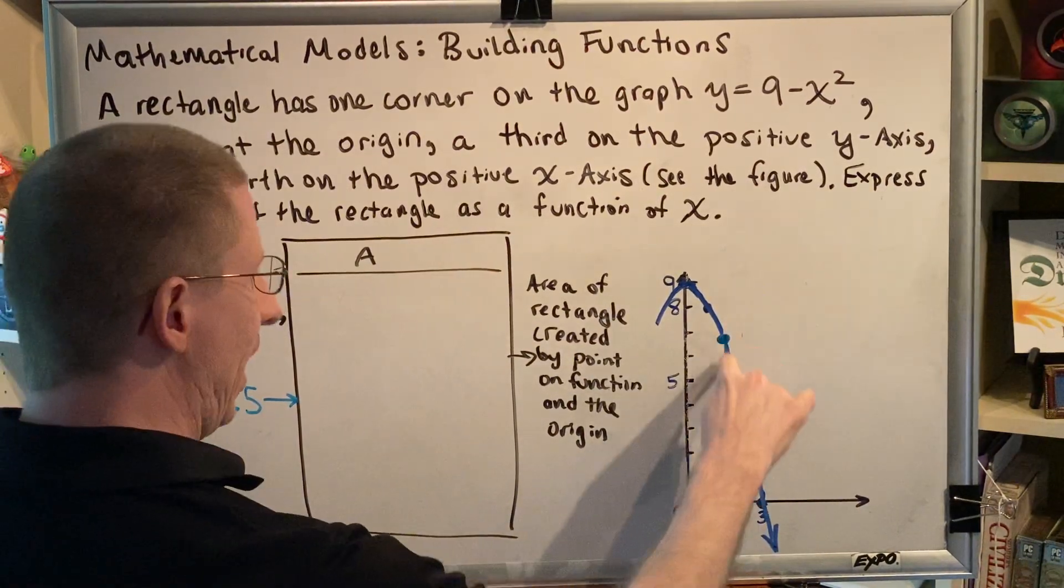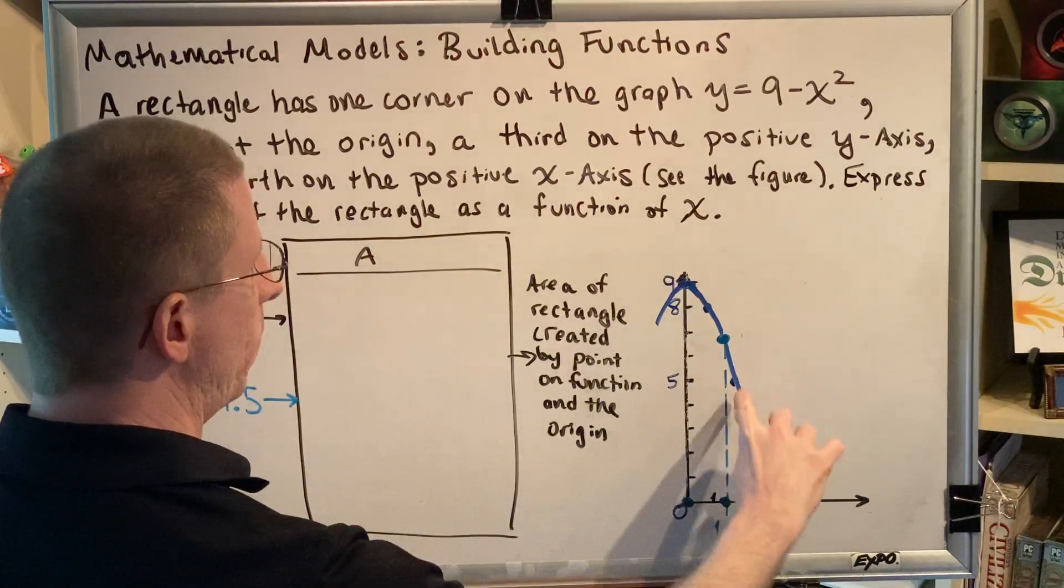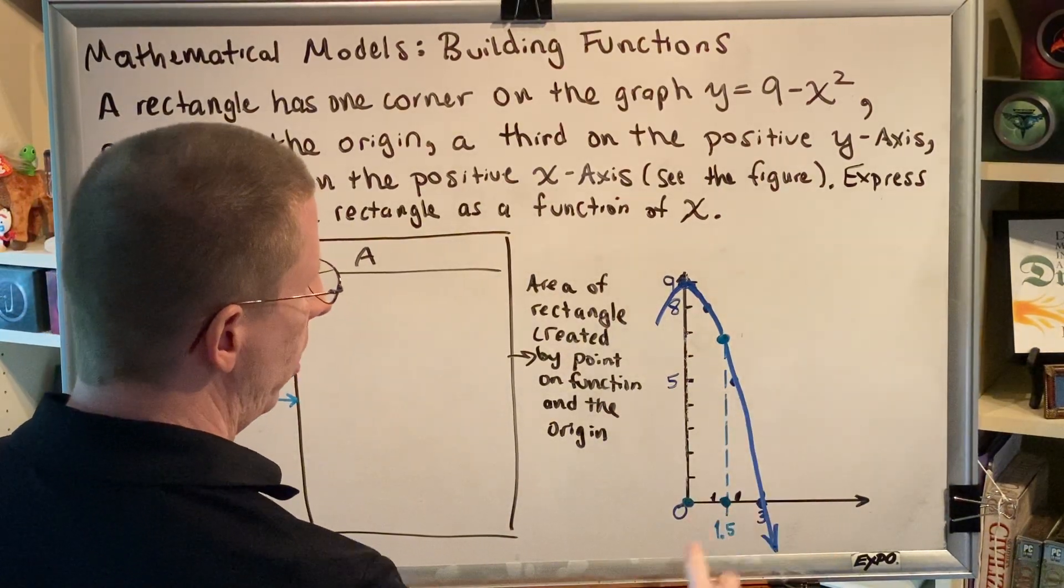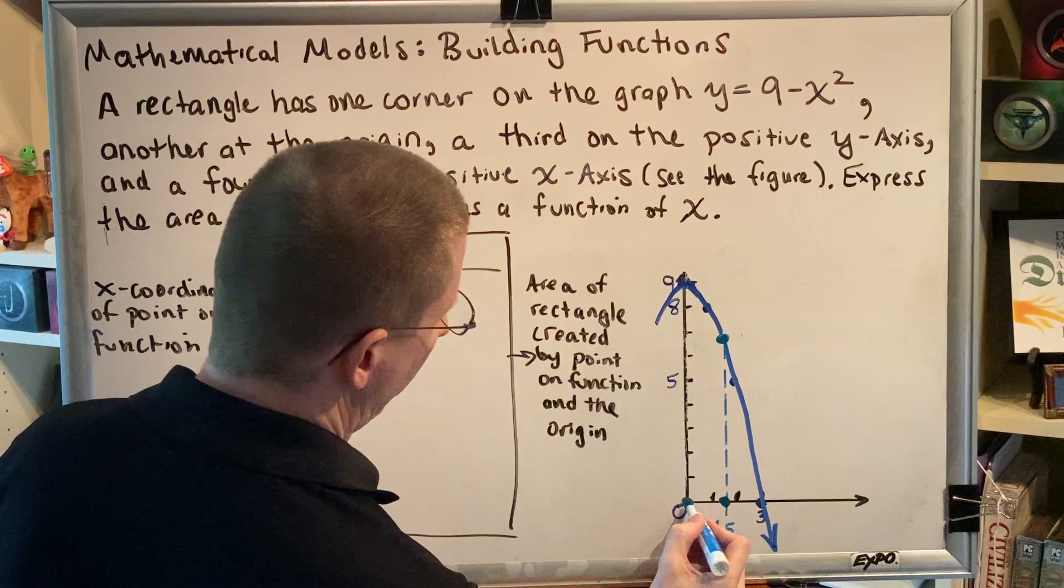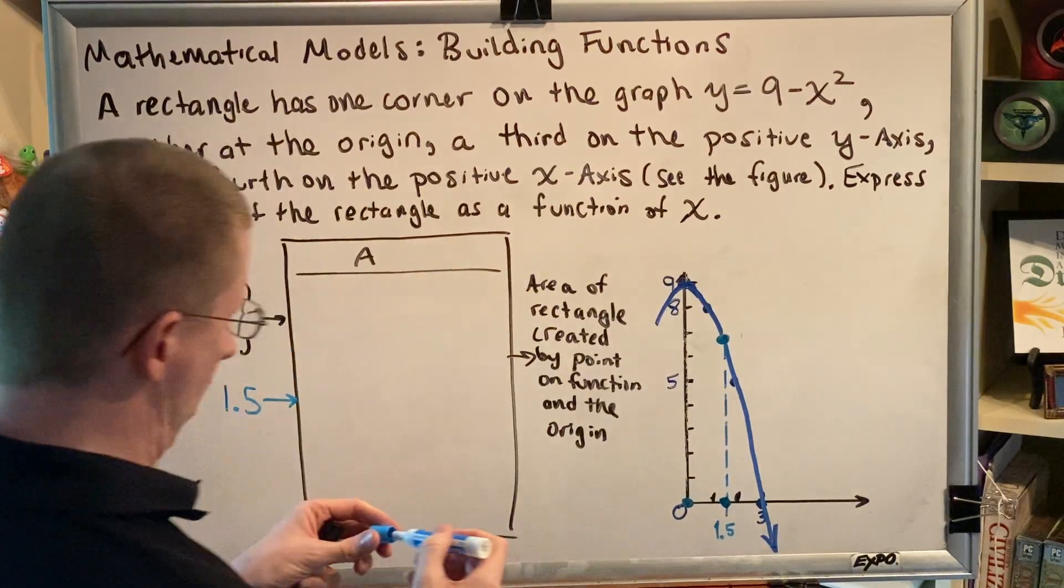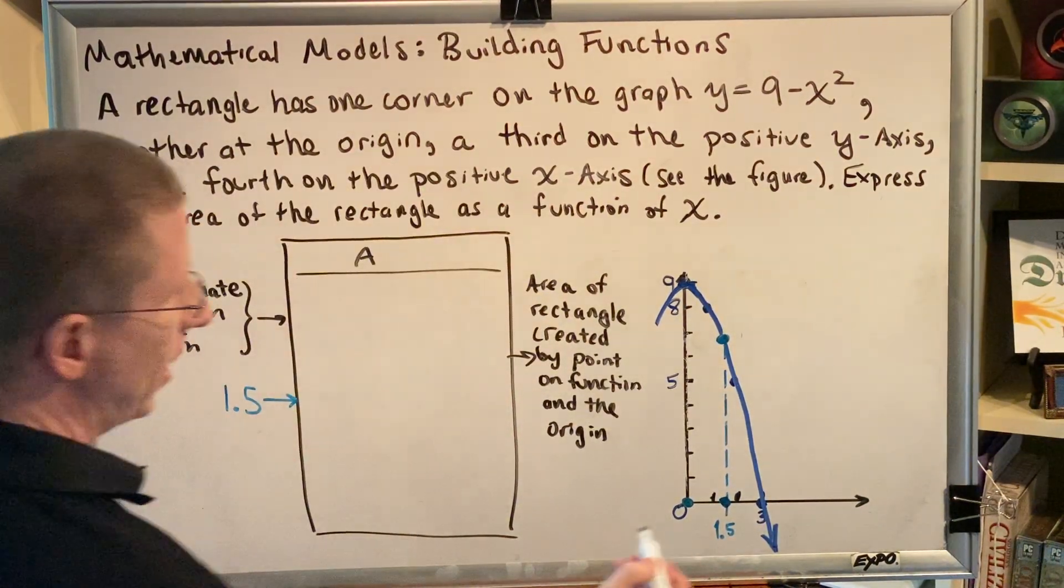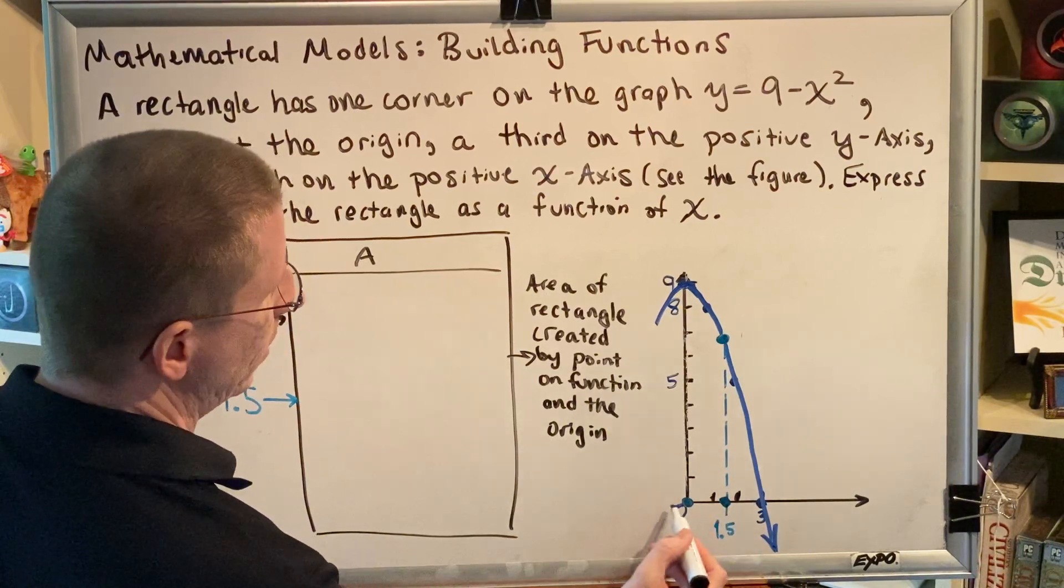From that, we can see that the height of the rectangle is measured from here to here, and the base is measured from here to here. The first thing we observe is that the base is very easy to measure.